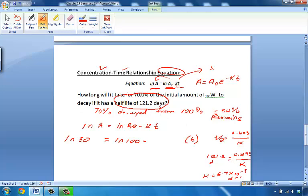If it decays in a half-life of 121.2 days, that means the K value for it should be 5.7 times 10 to the minus 3. So, let's go ahead and plug that in here for K. 5.7 times 10 to the minus 3 inverse days.